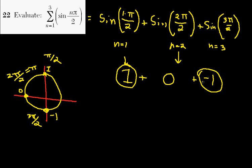So 1 plus negative 1 is 0, plus 0, and the answer is 0. When we add all these together, we get exactly 0. So all that work for nothing.